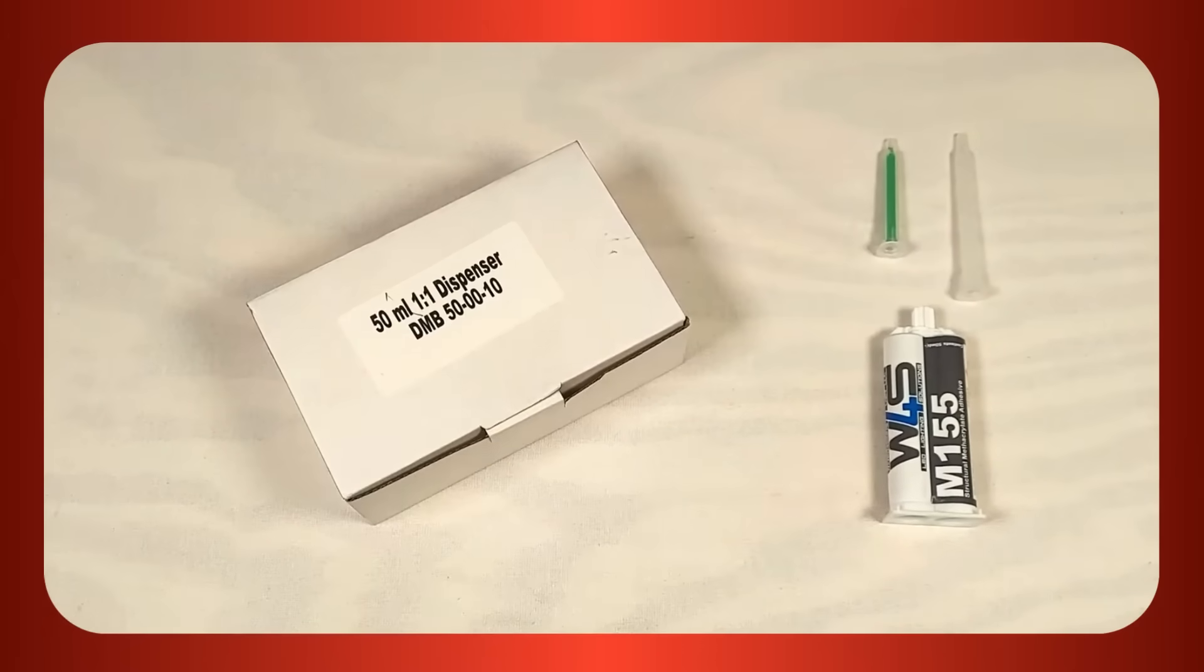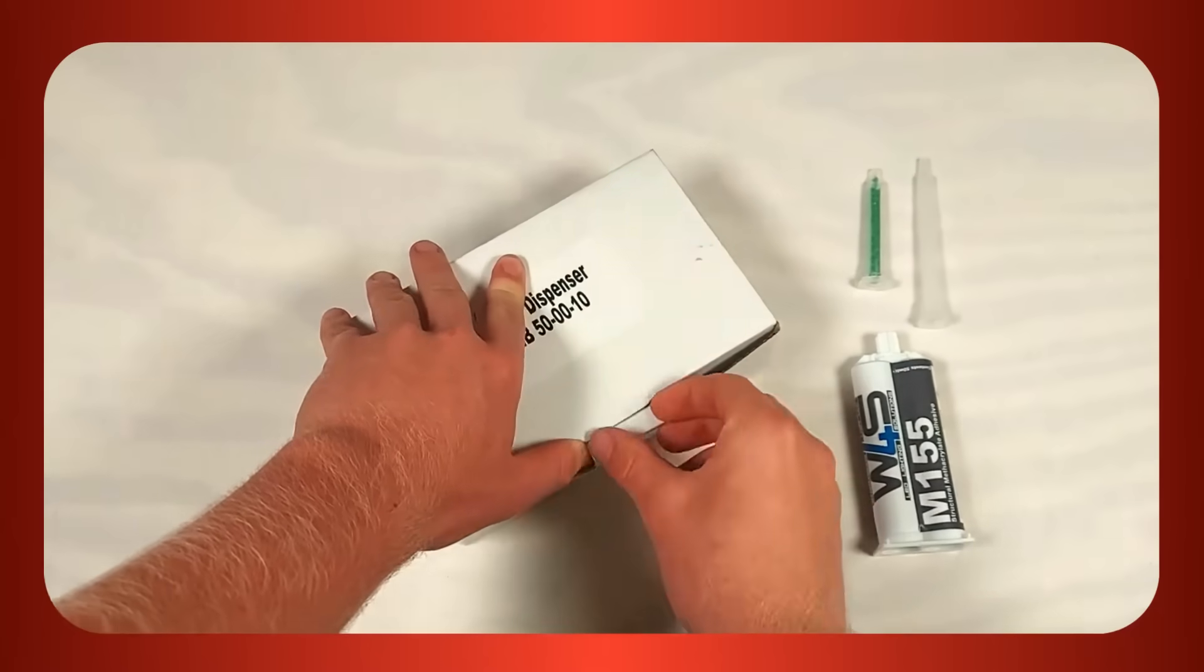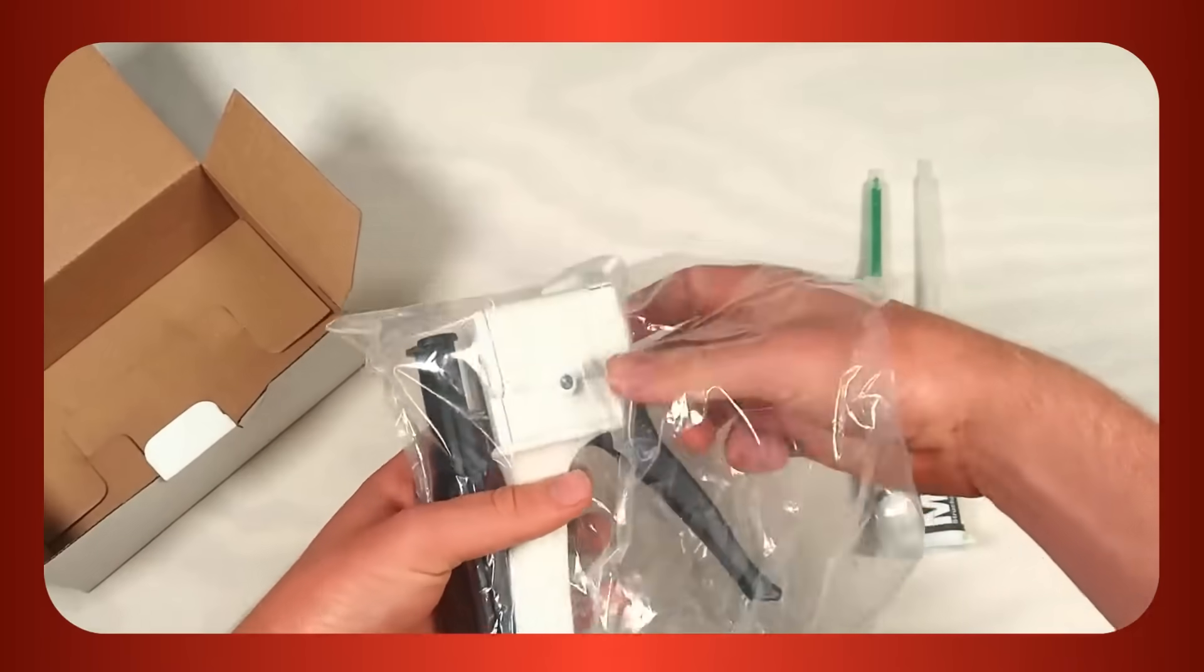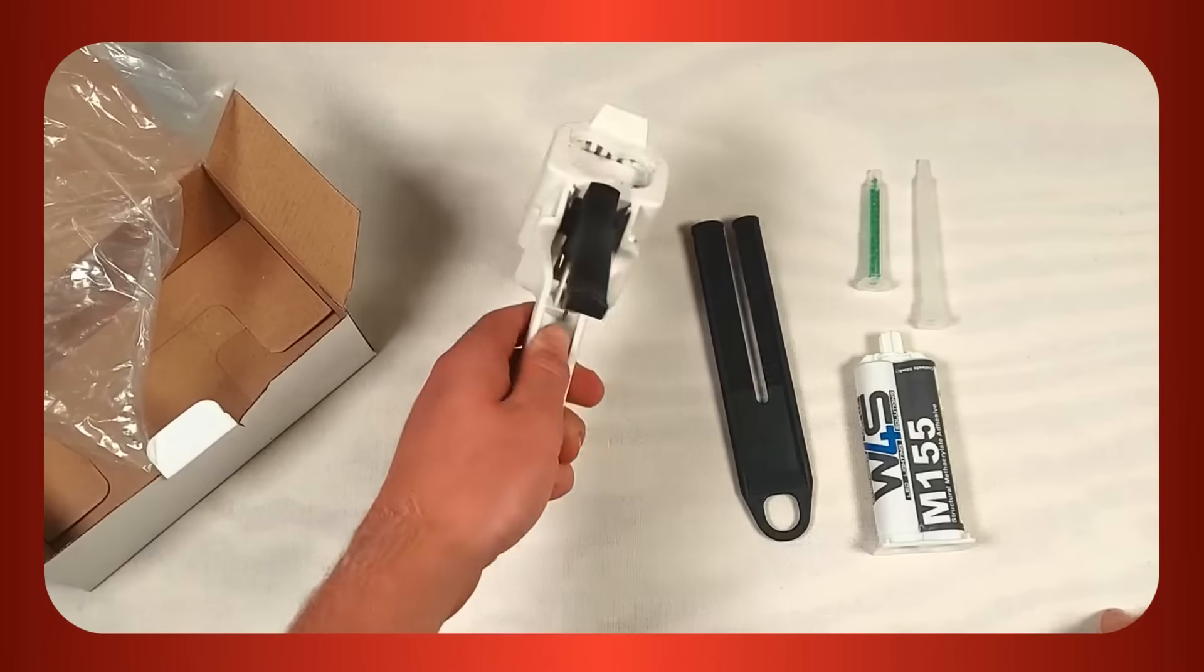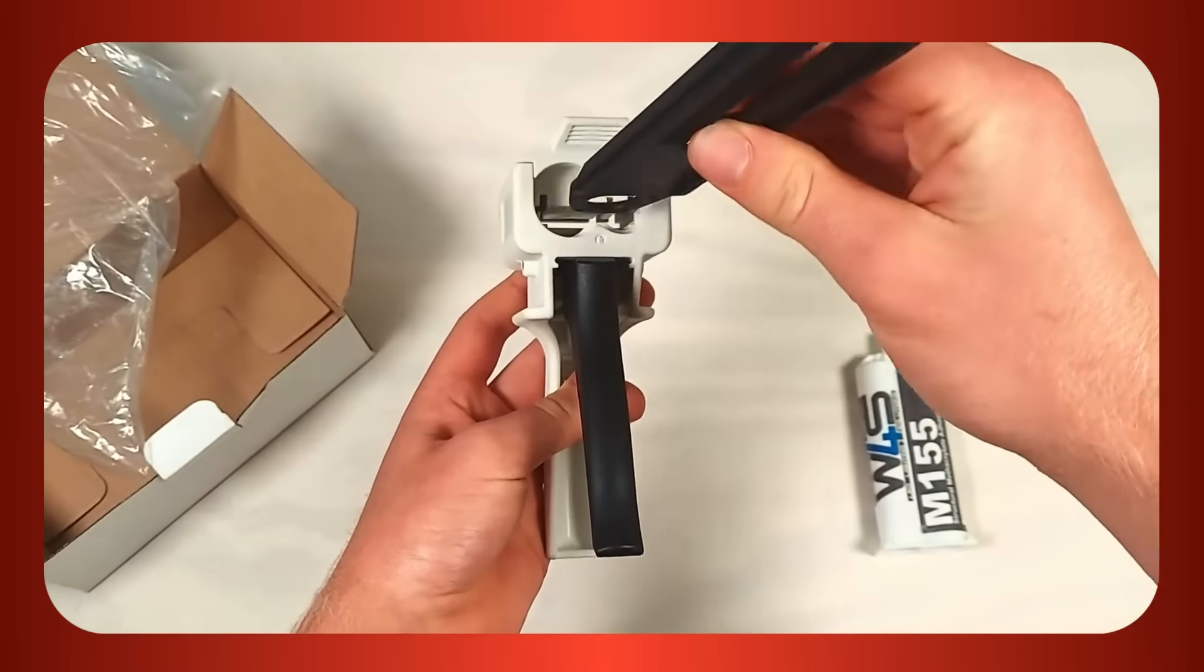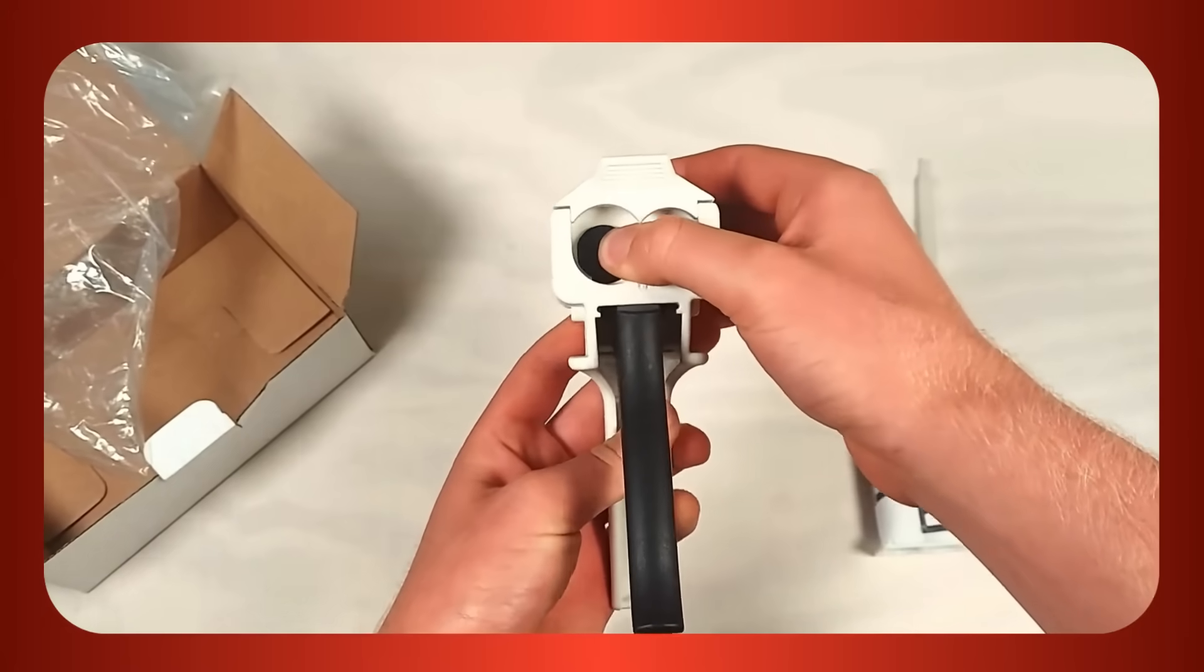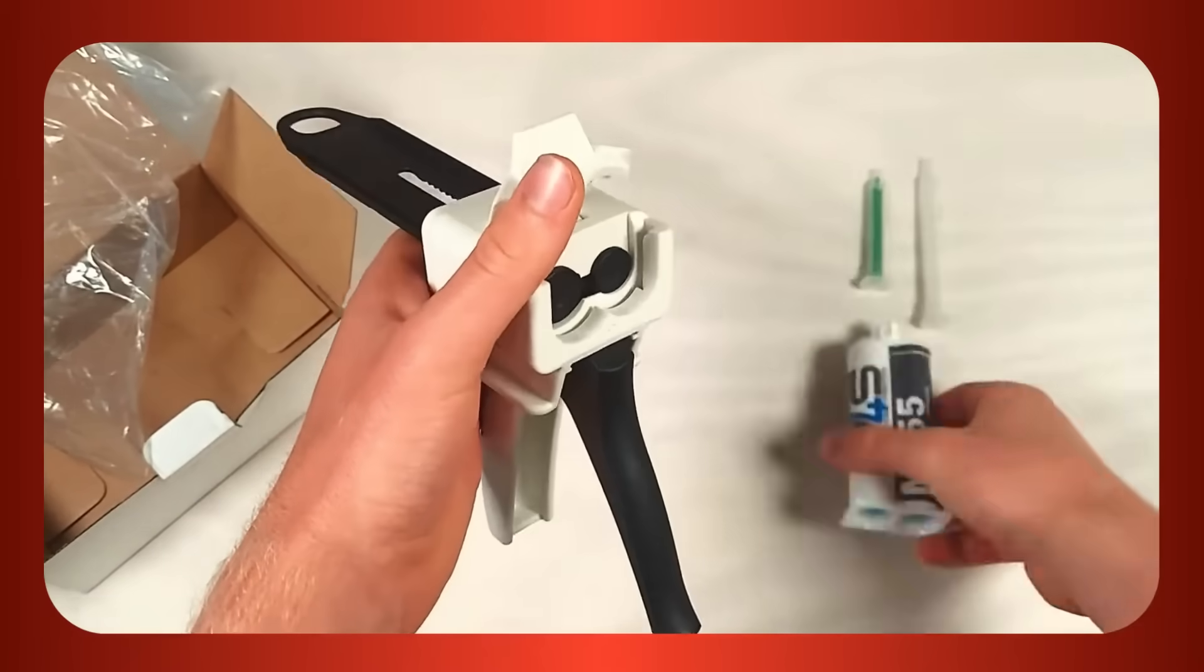Today we're using the 50 milliliter one-to-one glue, although the gun can support two-to-one as well. The first step is to slide the actuator into the gun. To do this, push the silver lever on the back of the gun up. Be sure to insert the actuator ridge side down. Now lift up the flap on top of the gun.